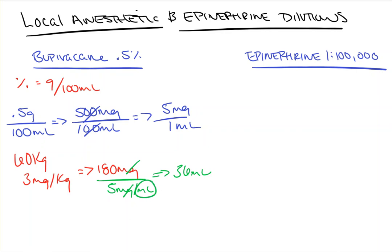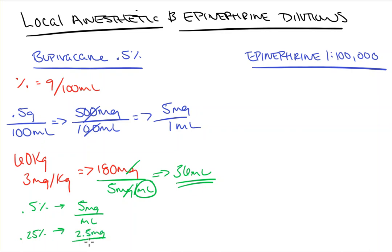For a patient getting marcaine in their wounds after surgery, this tells you how much volume you can give depending on the concentration. This holds true for any local anesthetic. A quick shortcut: for 0.5%, just move the decimal — that gives you 5 mg per ml. For 0.25%, it's 2.5 mg per ml. That's the fast way, but now you know how to work it out fully.